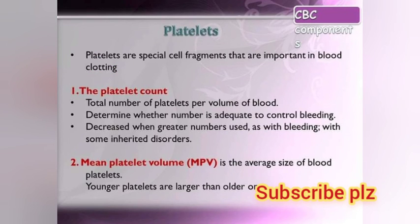Platelets are special cell fragments that are important in blood clotting. The platelet count is the total number of platelets per volume of blood, determining whether the number is adequate to control bleeding. It decreases when a greater number are used, as with bleeding or some inherited disorders. Mean Platelet Volume (MPV) is the size of blood platelets — younger platelets are larger than older ones.